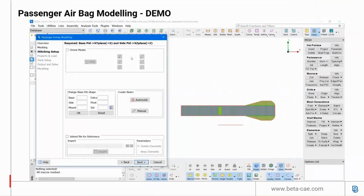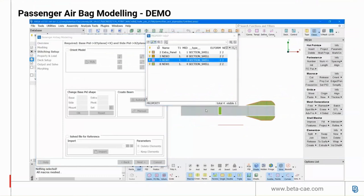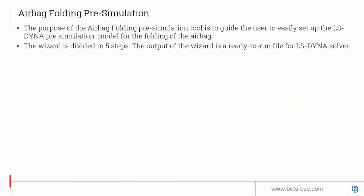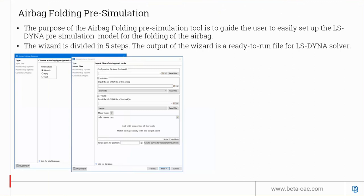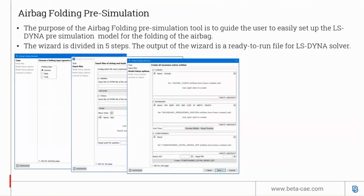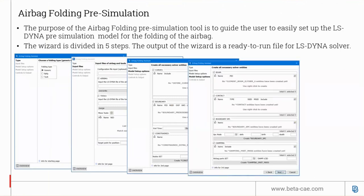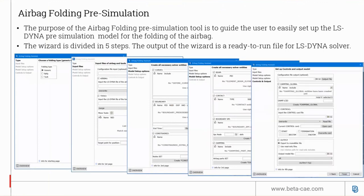Regarding the airbag folding simulation, the purpose of the tool is to guide the user to easily set up an LS-DYNA simulation model for airbag folding. The user first chooses the folding pattern — currently three types are supported: generic, BFG, and tuck. Then inputs the required airbag file and folding tools, defines the required curves, boundary and constraint conditions, defines the beam elements and constraints, and finally outputs the control cards to LS-DYNA.